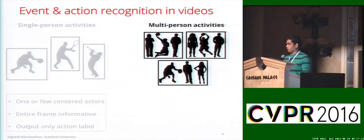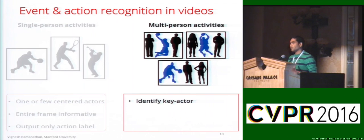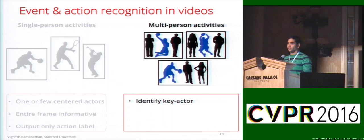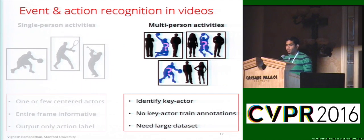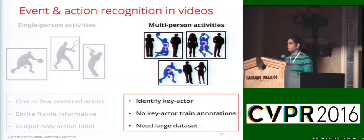So what happens when we move to this setting? In these settings, there are often many people present in the scene, but only few people who actually take part in the action, and we want to identify these key actors in addition to the event or action label. Also, it's not easy to have key actor annotations during training and we want our model to function without such annotations. Finally, we also need a good dataset at the scale of modern single person activity datasets for training and testing.